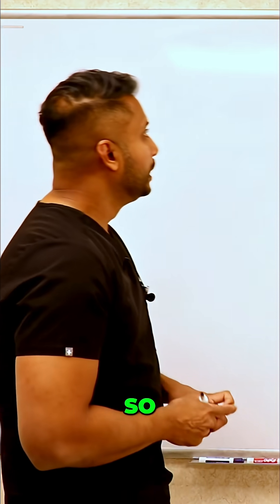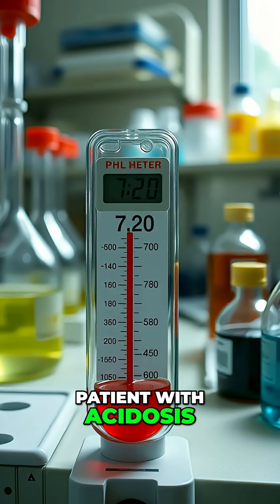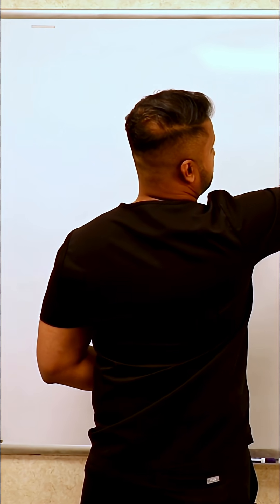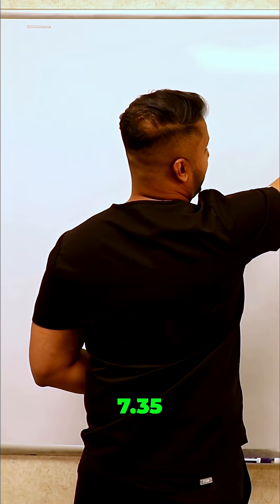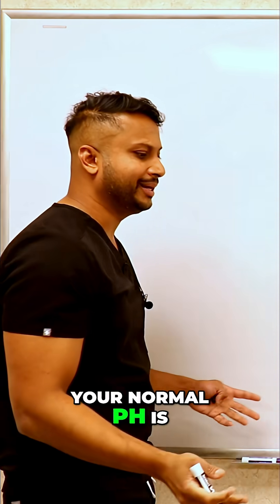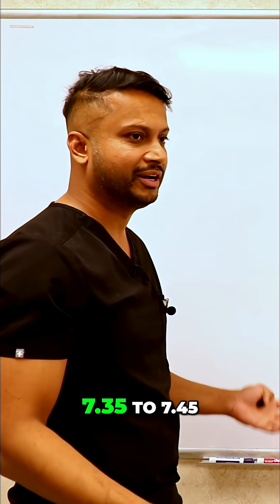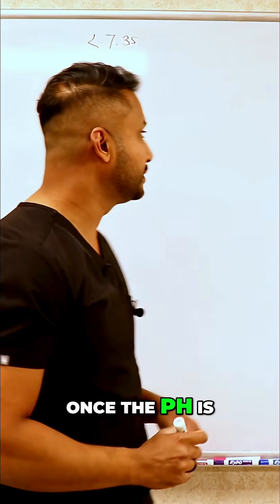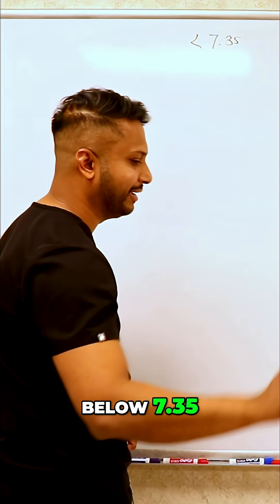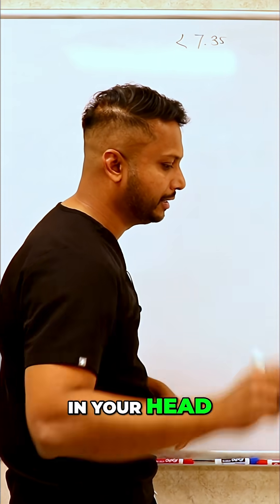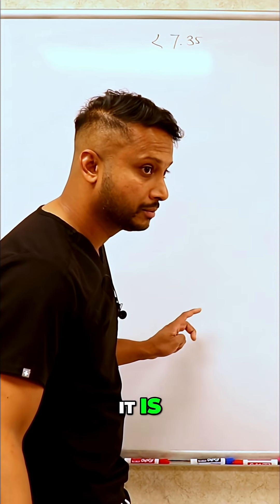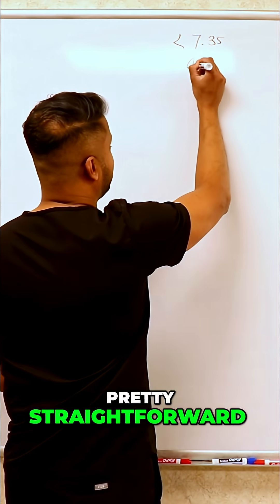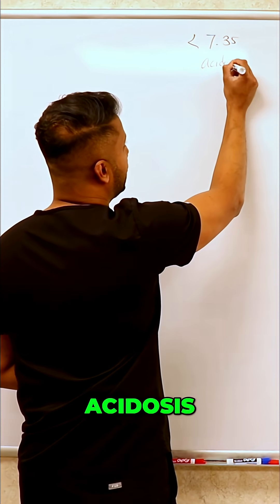If you have a patient with acidosis, your pH is typically going to be less than 7.35. Your normal pH is 7.35 to 7.45. Once the pH is below 7.35, what are you going to tell yourself? It is acidosis. Pretty straightforward — acidosis.